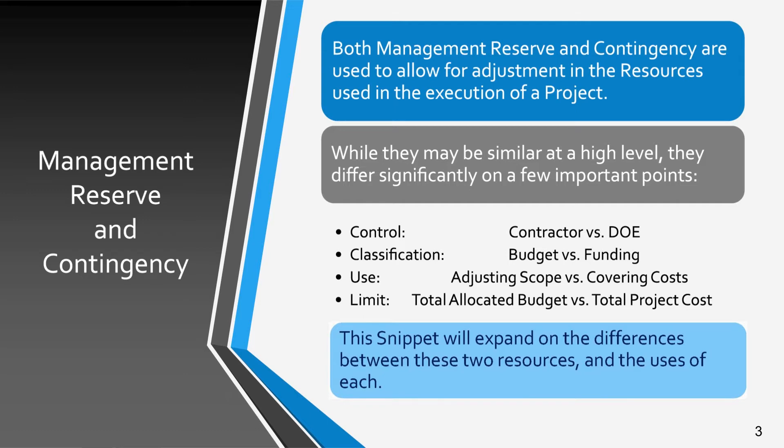The amount of MR budget held by a contractor is limited by the contractor's total allocated budget, or TAB, while the amount of contingency funding is limited by the DOE total project cost, or TPC. This snippet will expand on the differences between these tools and the uses of each.